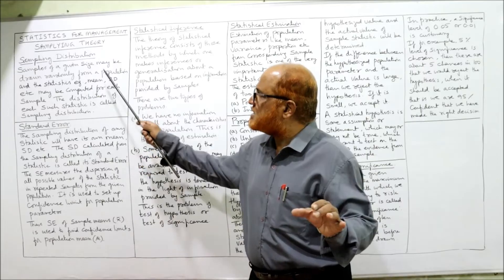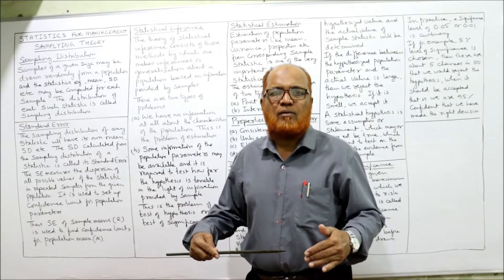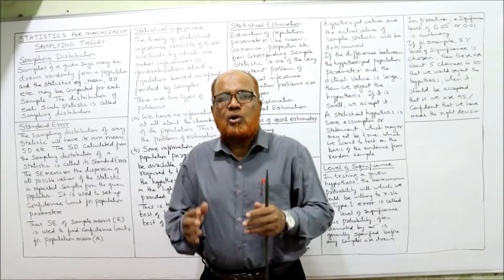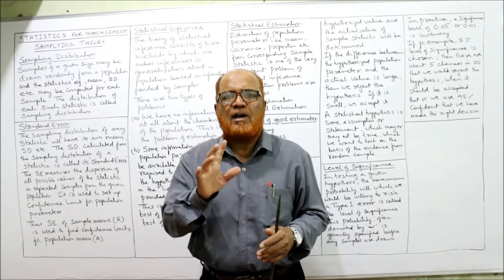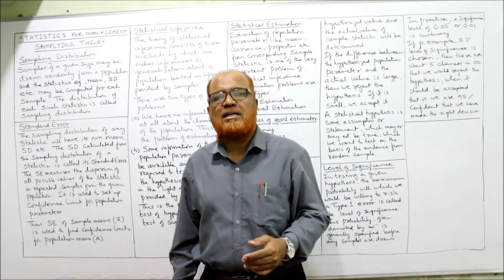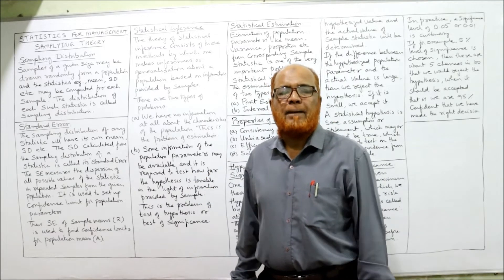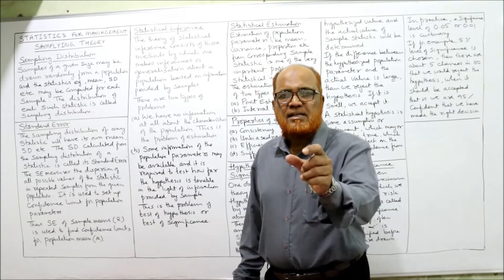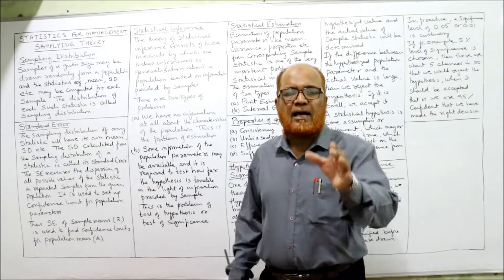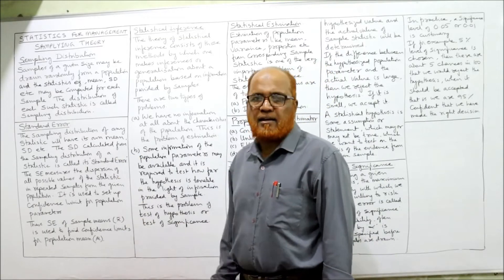Now I'm going to discuss sampling distribution. Samples of a given size may be drawn from the population. For example, in a business organization producing a product continuously, the manufacturer takes a sample of 10 items every hour — first sample 10 items, second sample 10 items, third sample 10 items, and so on. A number of samples of a given size are taken from the population, all the data are collected and arranged in a distribution, and that distribution is called the sampling distribution.